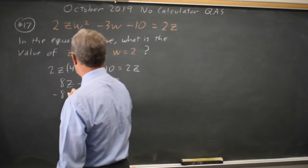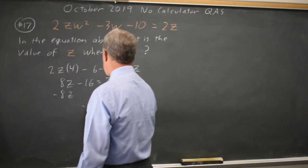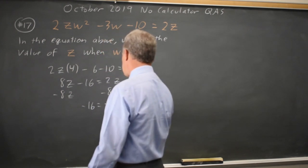Subtracting 8z from both sides I get negative 16 equals negative 6z.